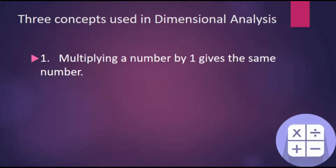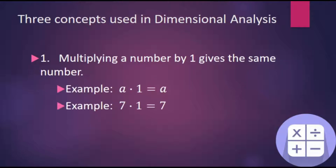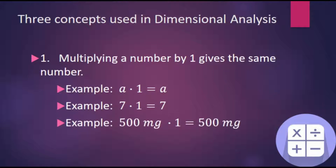The first concept is multiplying a number by one gives the same number. Here we have it in an algebraic expression, and here is an example: 7 times 1 is equal to 7. Or if we have some measurement, 500 milligrams times 1 is equal to 500 milligrams.